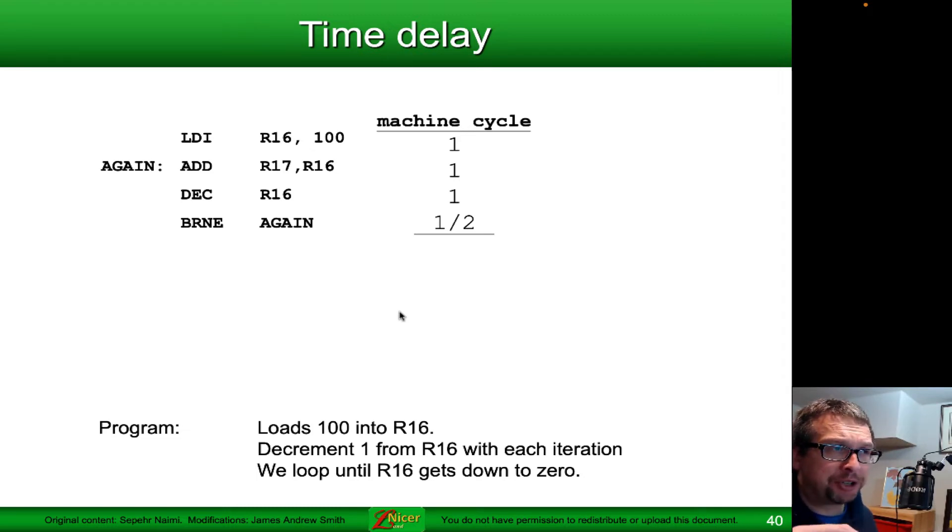If the branch works, it goes back to the add operation at the again label. It loops until such time as, because of those decrements, the value in R16 goes down to zero. At which point, instead of looping back to the again label, we go to the next line in the program.